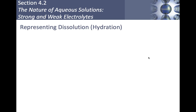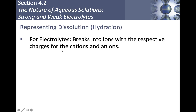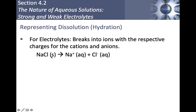How do we represent dissolution — sometimes called hydration? For electrolytes, they break into ions with their respective charges for cations and anions, so you still need to know those charges from the periodic table. For example, dissolving salt in water: NaCl (s) → Na⁺ (aq) + Cl⁻ (aq). Notice the state of matter. Aqueous means it is mixed with water. That's what happens when we dissolve something like salt in water.